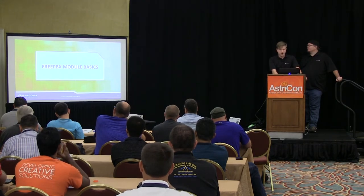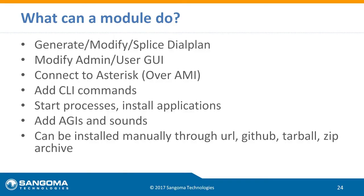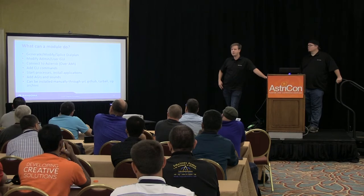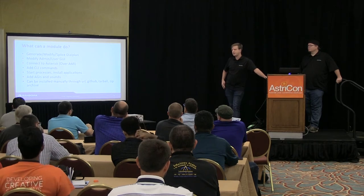Going to go quickly over FreePBX module basics. What can a FreePBX module do? We can do all this and more. We can modify a splice, which means insert your code into the middle of dial plan anywhere in FreePBX. Generate new dial plan. Modify the admin user GUI, which means you can add new functionality to the admin GUI. You can insert lines, insert rows. In the user side, you can add widgets. Connect over AMI - every time FreePBX loads, it actually connects to Asterisk over AMI, unless it's told not to.